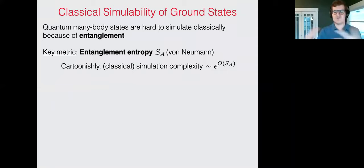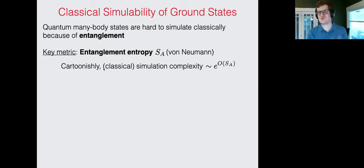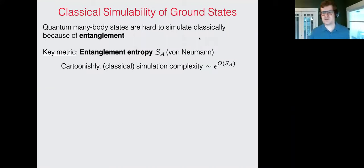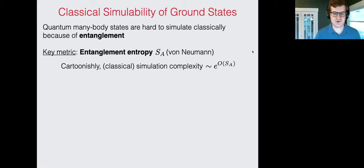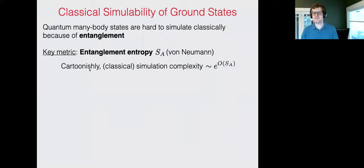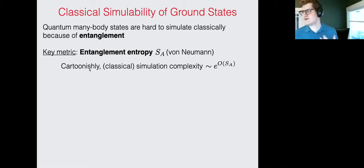You can ask how hard it is to find the ground state of a quantum many-body system classically. In general, quantum many-body states are hard to simulate classically because of entanglement. One key metric to quantify entanglement is the entanglement entropy, denoted S_A, attributed to von Neumann. Cartoonishly, the classical simulation complexity should scale like the exponential of something of order the entanglement entropy, because the entanglement entropy tells you how much entanglement is in your system — and it is precisely that entanglement contributing to the non-classicality of the problem.